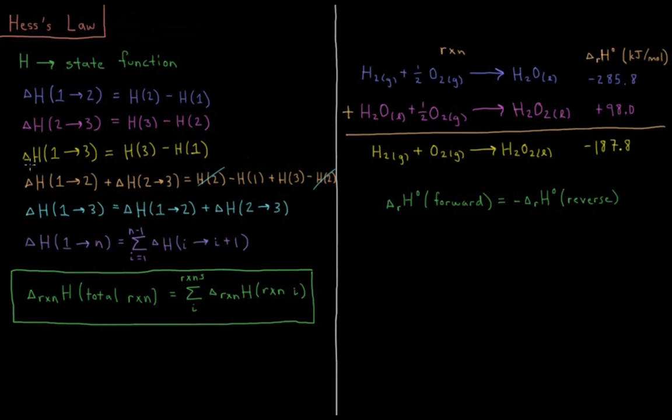The enthalpy of going from state 1 to state 3 is the enthalpy of state 3 minus the enthalpy of state 1. But it's the same whether we went directly from 1 to 3 or whether we go from 1 to 2 and then 2 to 3. If we add up the enthalpy from 1 to 2 to 2 to 3, we have H2 minus H1 plus H3 minus H2. The two H2's cancel and you get the same result.